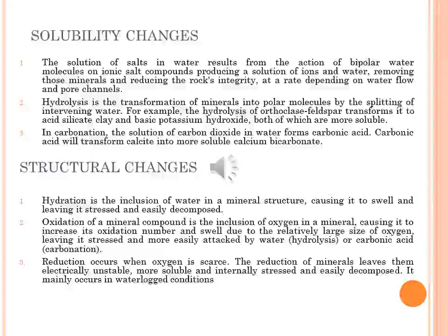Reduction is the opposite of oxidation — the removal of oxygen — reducing the oxidation number of part of the mineral. This occurs when oxygen is scarce or deficient. The reduction of minerals leaves them electrically unstable, more soluble, and internally stressed, and easily decomposed. It mainly occurs in waterlogged conditions. Chemical weathering becomes more effective as the surface area of the rock increases, and is thus favored by physical disintegration. These seven processes together drive weathering.